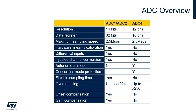Since VREF+ is also the ADC4 reference voltage, this might cause conversion errors. To prevent this issue, ADC4 implements a control bit that activates the concurrent mode protection. Each channel of ADC4 can choose one out of two sampling times, while each channel of ADC1-ADC2 can be sampled with a different sampling time.